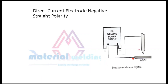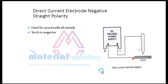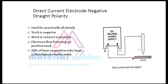The next polarity is direct current electrode negative, also called straight polarity. It is used for practically all metals. The torch is negative and the work is connected to positive. Electrons flow from negative to positive work. 70% of heat is on the positive side, distributed into the work. It helps to increase the tungsten electrode life and provides deep penetration.